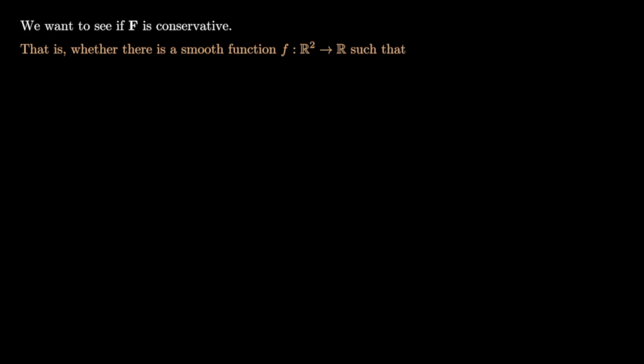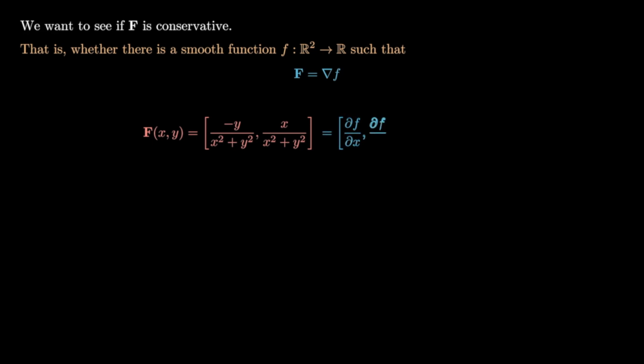Now we want to see if the vector field f is conservative — that is, whether we can find a smooth function f from ℝ² to ℝ such that f equals the gradient of that potential. If this vector field is conservative, the i-component equals the x-partial derivative of f and the j-component equals the y-partial derivative of f. To find such an f, the x-partial derivative of f must equal -y/(x²+y²).